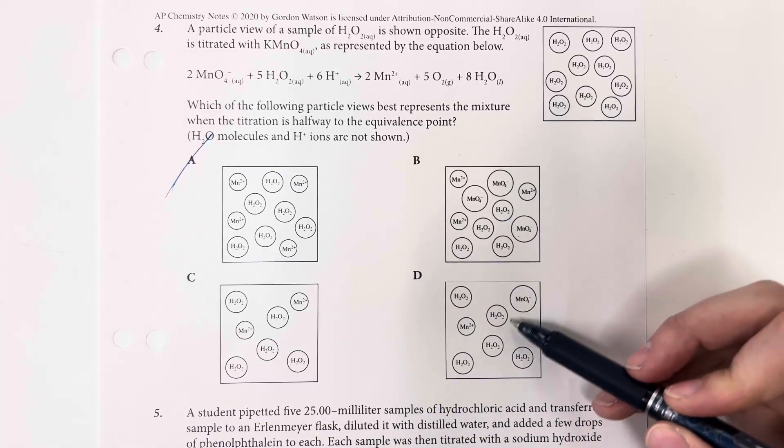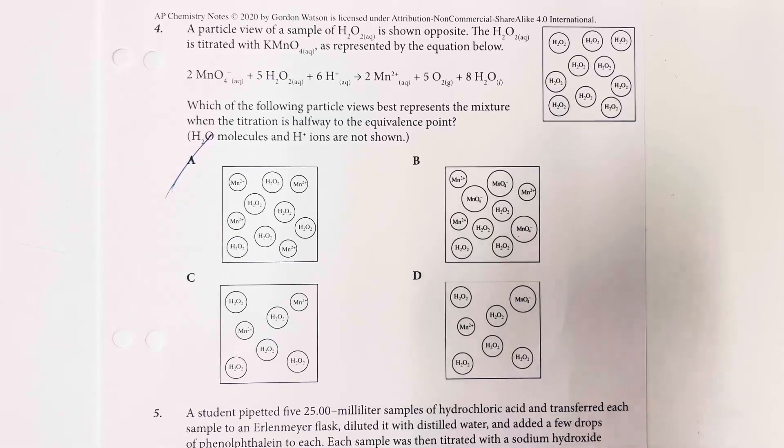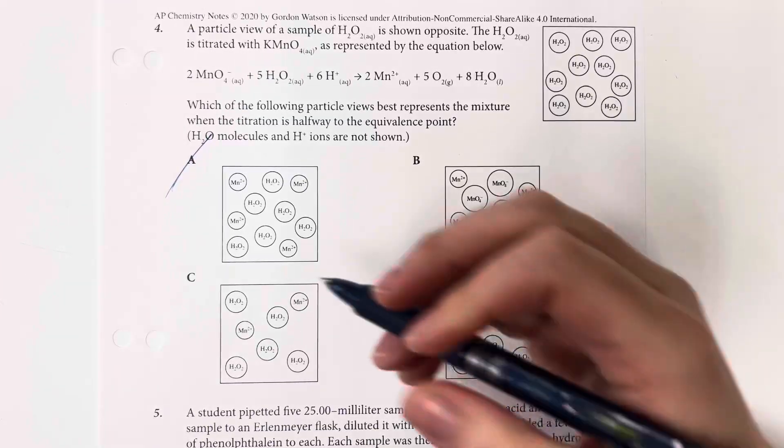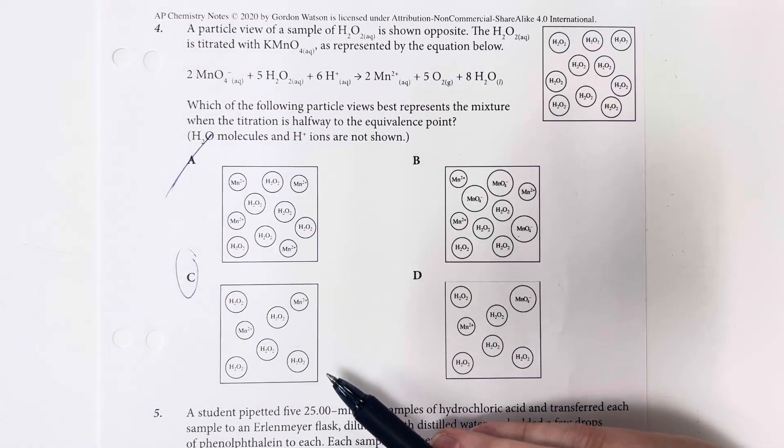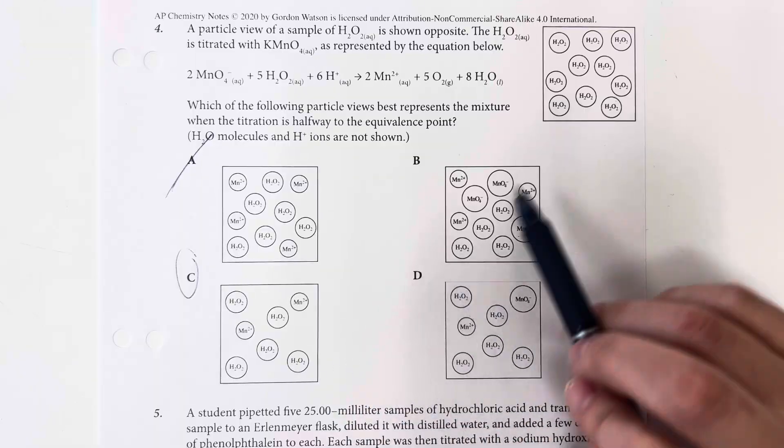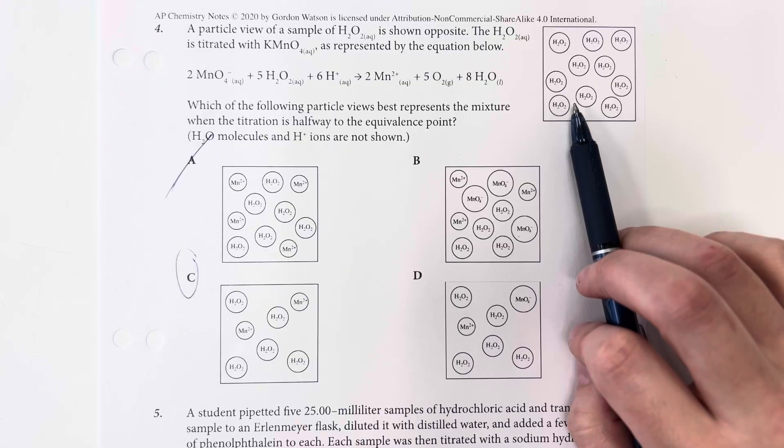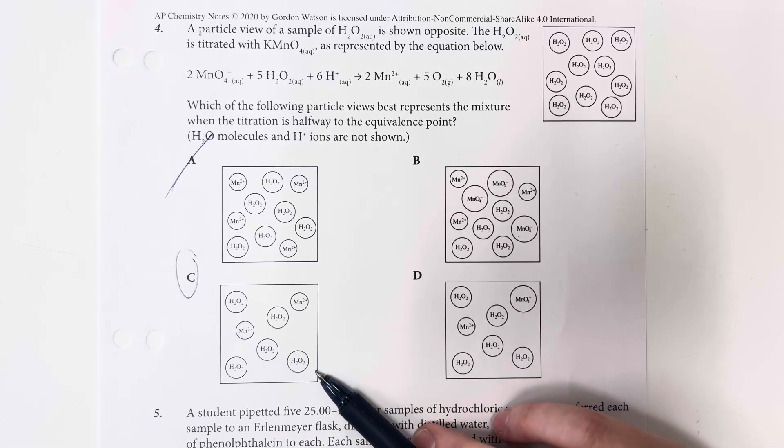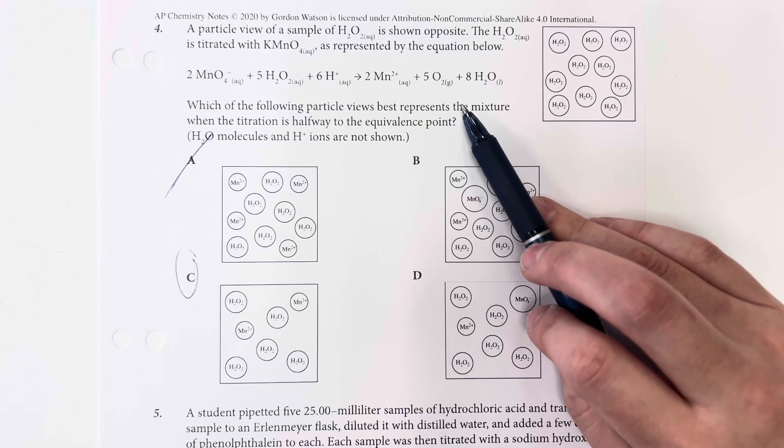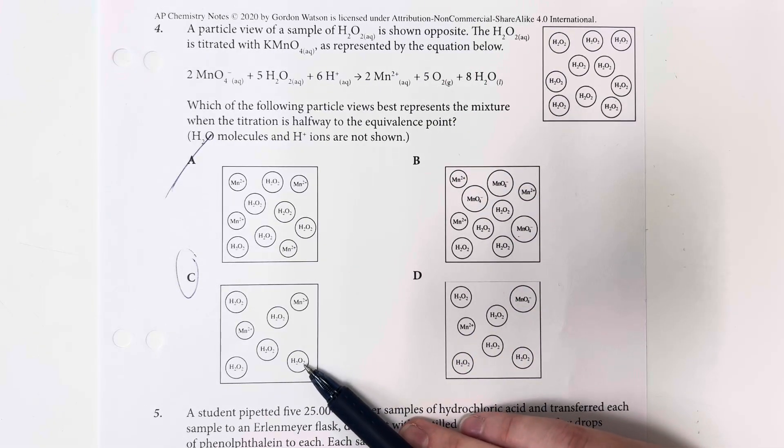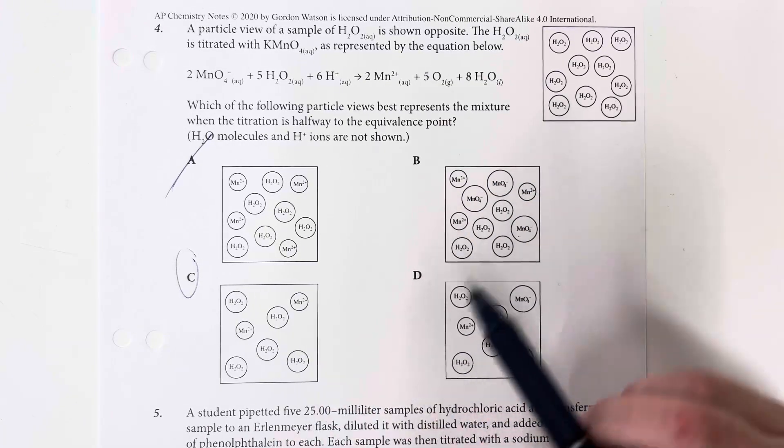Here we have the permanganate, the hydroxide, and just one manganese there. So I'm going to be choosing option choice C. I need to be halfway to equivalence point, which means that I am going to be looking to decrease my amount of hydrogen peroxides by approximately half. This is half. And then I also need products on my other side, as well as my reactant. So reactant being the peroxide and products being the manganese, that's going to be option choice C.